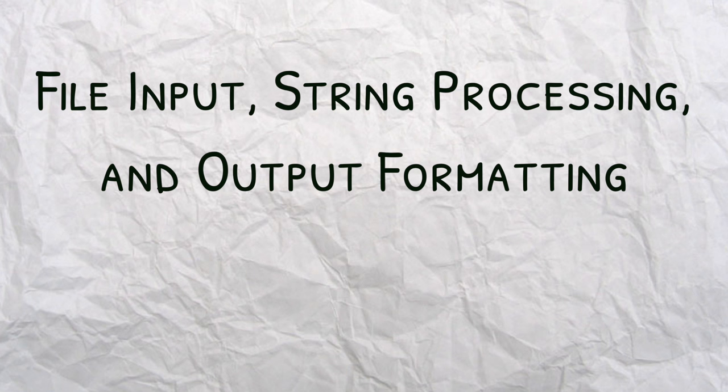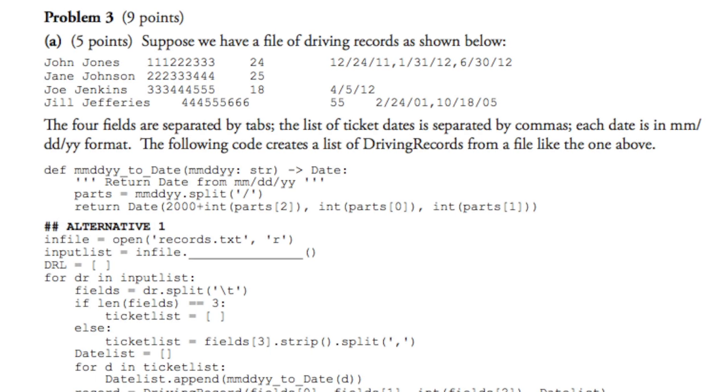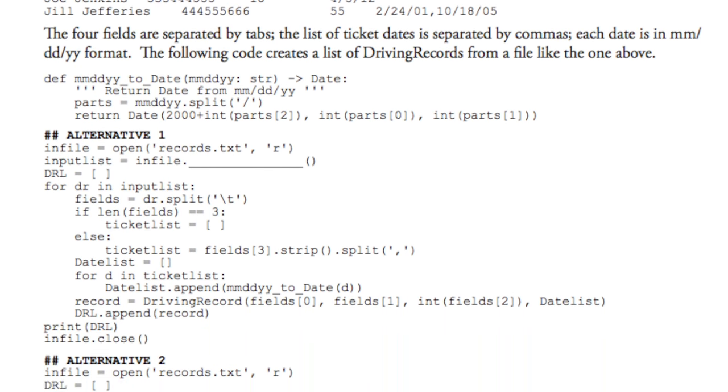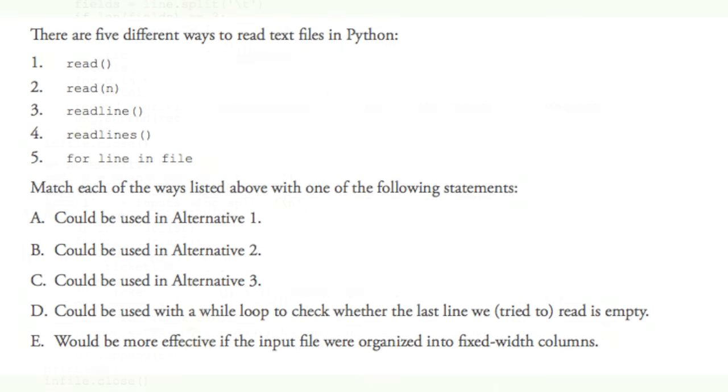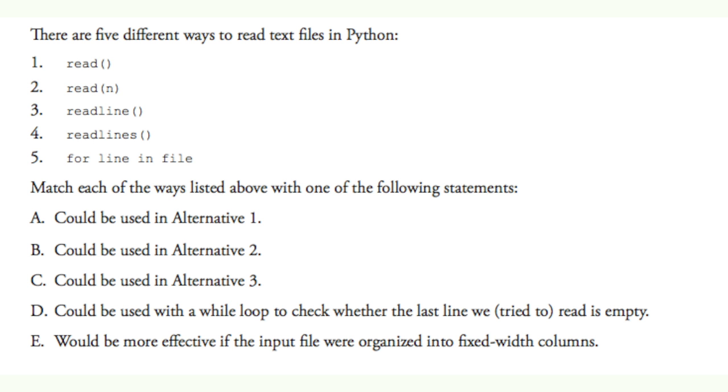Alright, so next up we are dealing with file input, string processing, and output formatting. And I have an example here from quiz number seven and it seems like there is a lot of stuff here. At the top this is a file of driving records here, so you have a name, their driver's license I would assume, how many tickets they have, and then dates here. So we have all these alternatives here, so different ways that we can write this function. And at the bottom it says there are five different ways to read text files in Python. We have read, we have read n, readline, readlines, and for line in file. So I went over all these in my last video. If you haven't seen that you can click on the little i in the corner and it will bring you to that video.